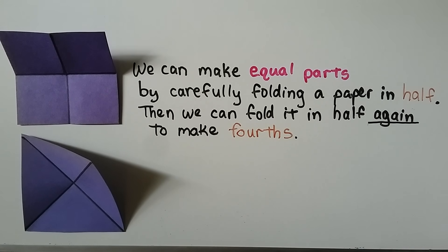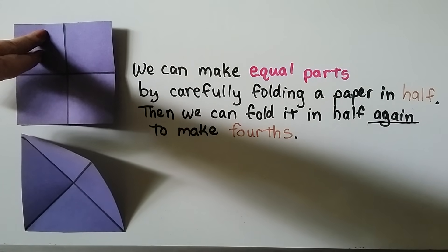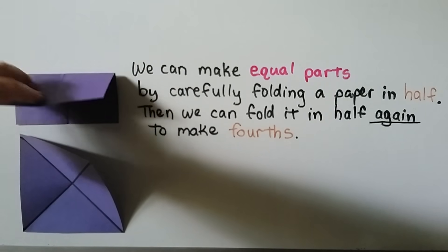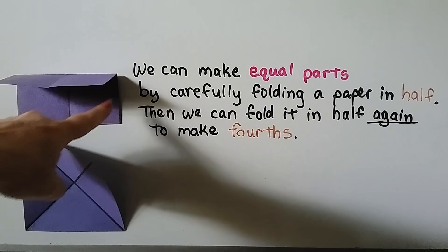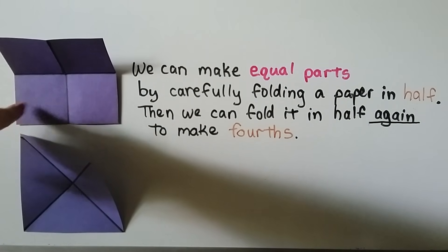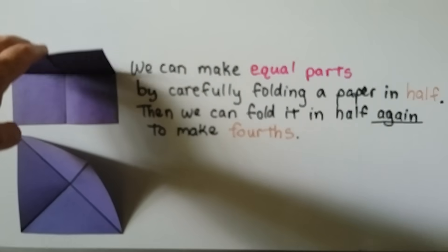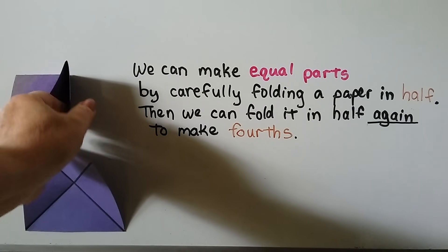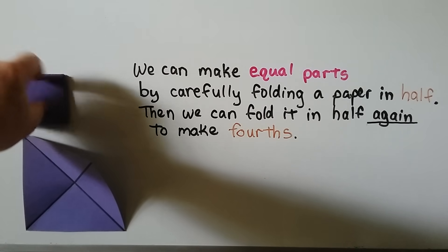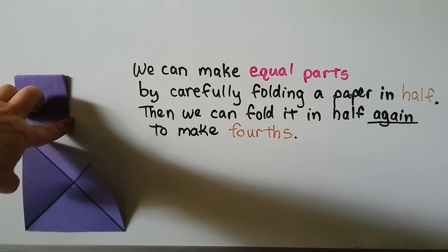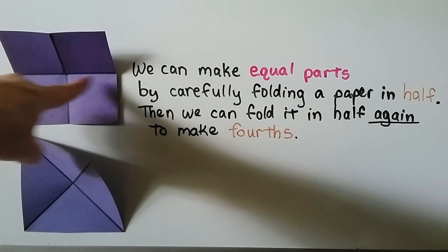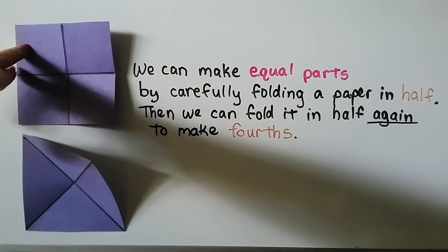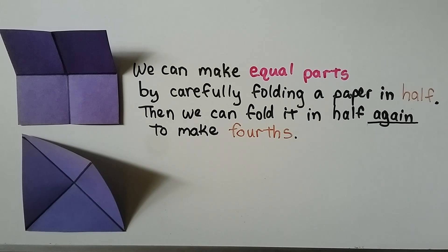We can make equal parts by carefully folding a paper in half. Here I have a square paper, and if I fold it in half like this, I've made an equal part here and an equal part here. The top part is equal to the bottom part — I have two halves. And we can fold it again in half. When we fold it nicely and then open it up, wherever the folds were, we now have four equal parts. We made fourths.